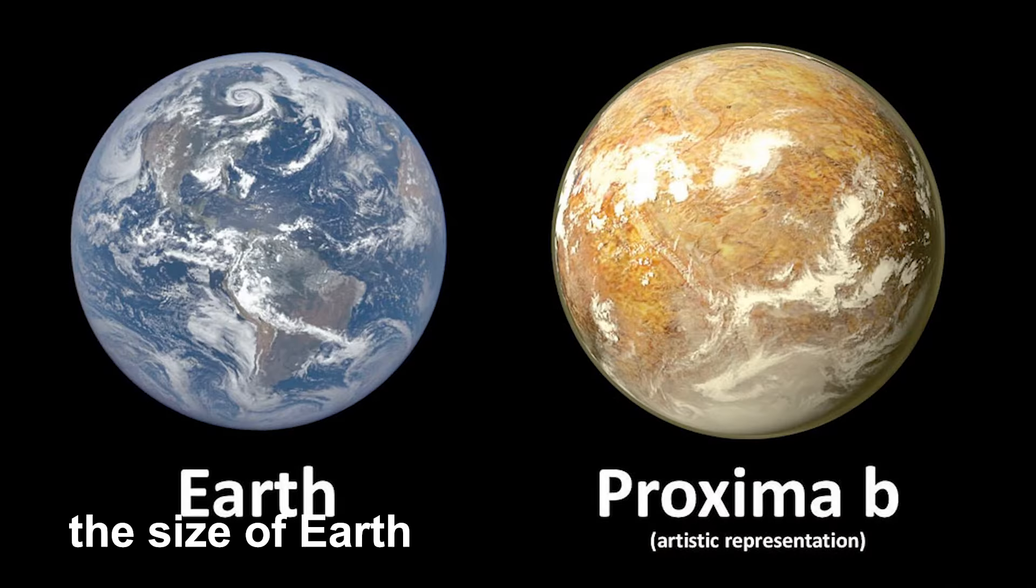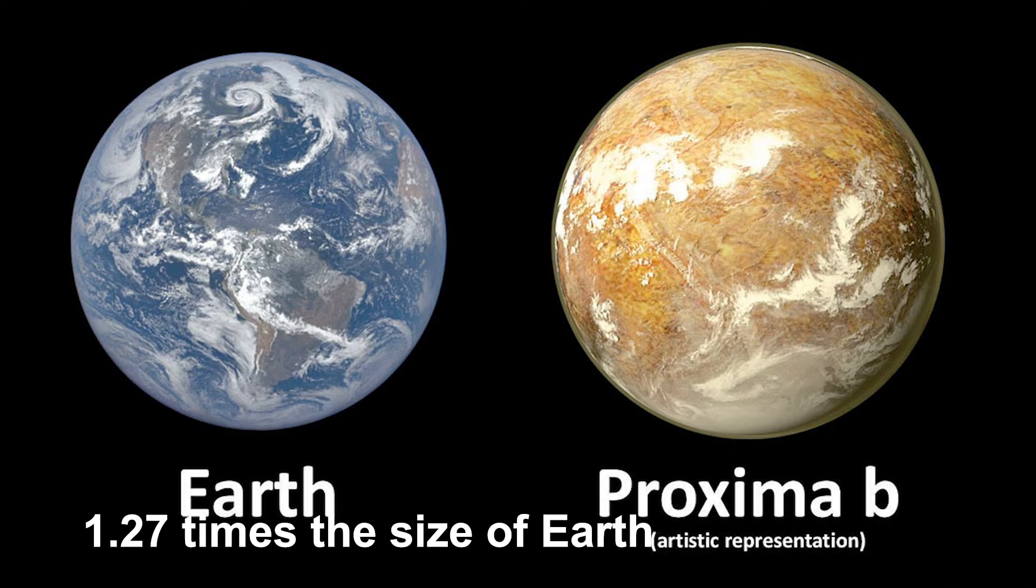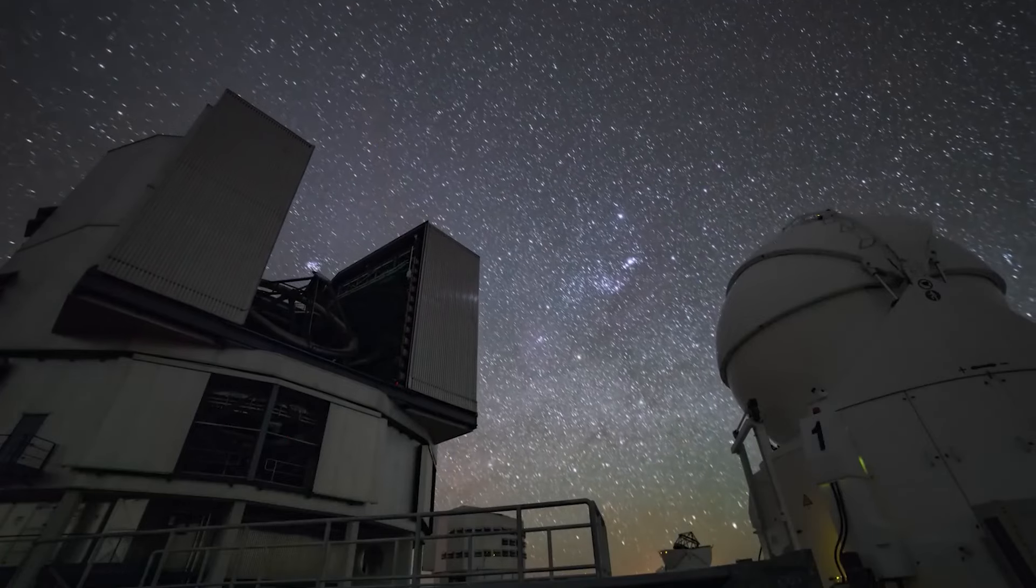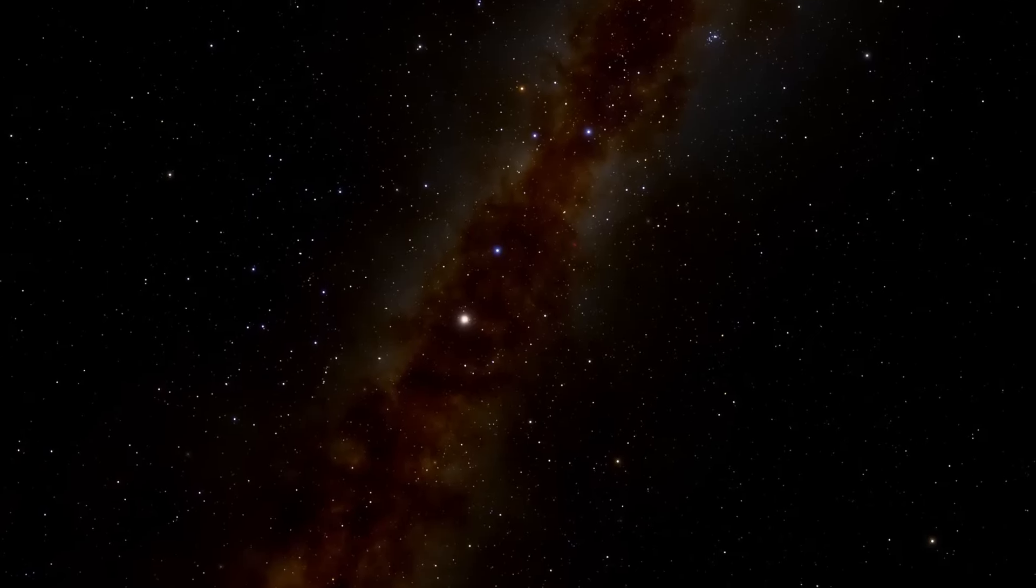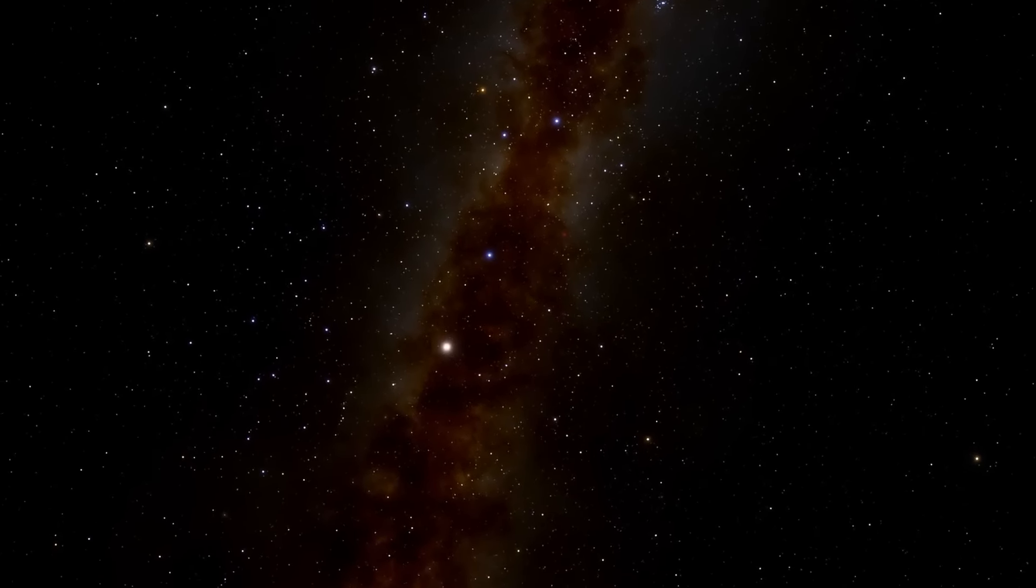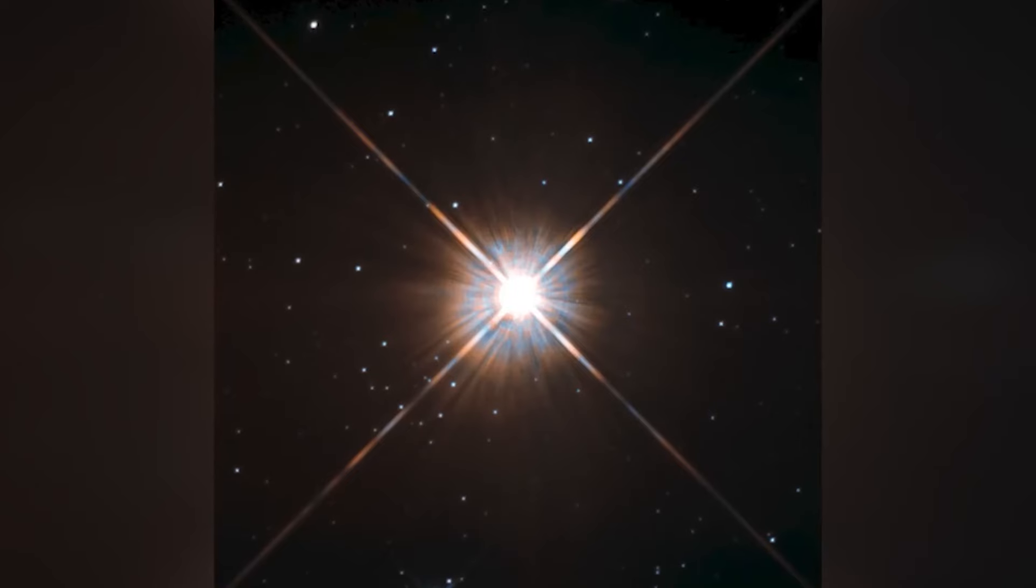Proxima b is a rocky exoplanet about 1.27 times the size of Earth, residing within the habitable zone of its parent star, an M-class red dwarf and part of the Alpha Centauri triple star system. Proxima b is our closest neighboring star, only about 4.2 light years away.